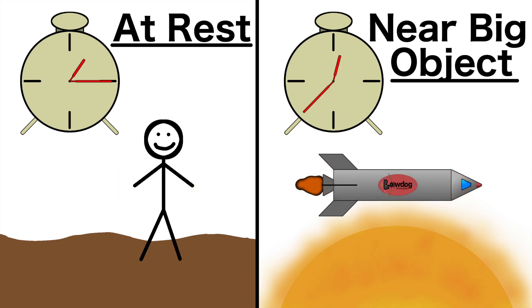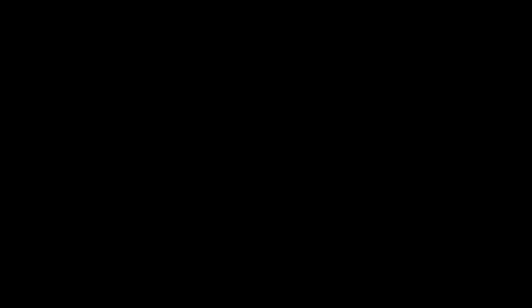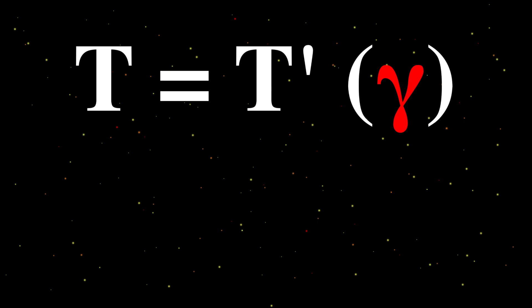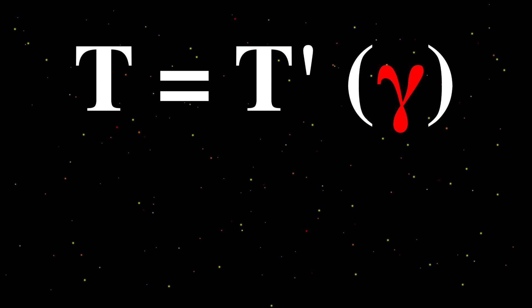We can find exactly how much time is distorted by using the time dilation equation. The equation is simple for the first scenario, which involves special relativity only. T is equal to T' times Lorentz factor.